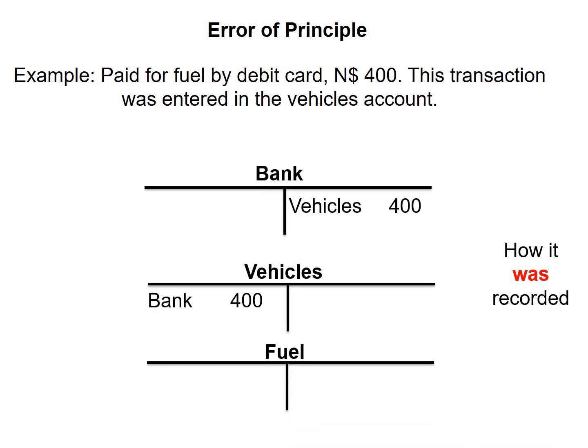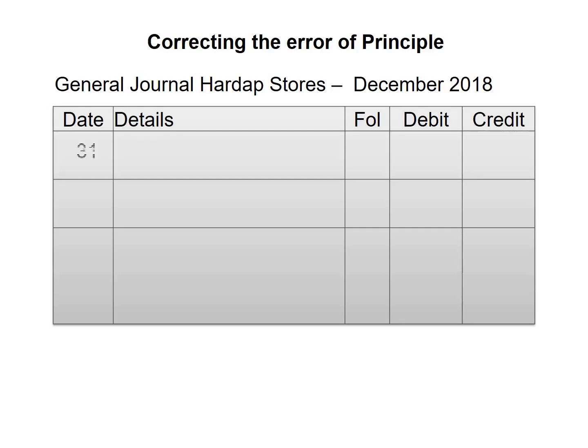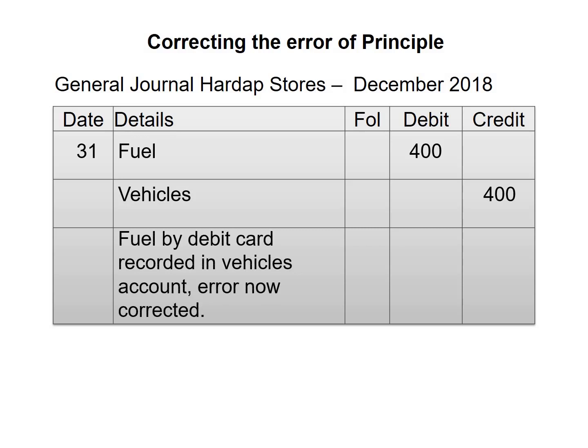Looking at how this was recorded: bank was credited, which is correct because we paid with a debit card, but vehicles was debited in place of fuel. To correct this in the general journal, we write the date, then debit fuel and credit vehicles. The narration will read: fuel by debit card recorded in vehicles account — error now corrected.